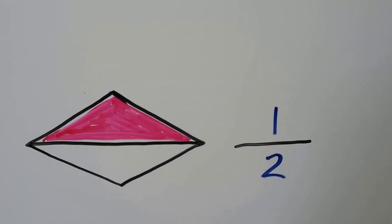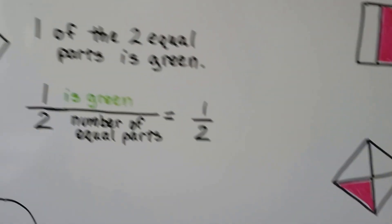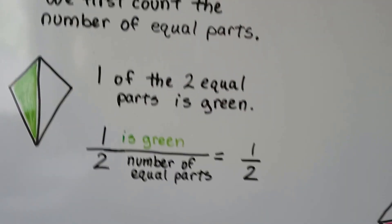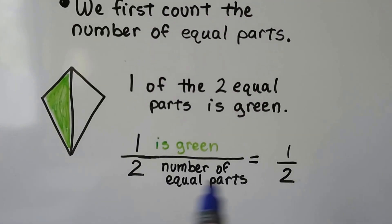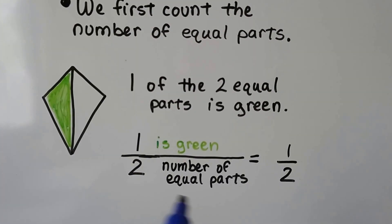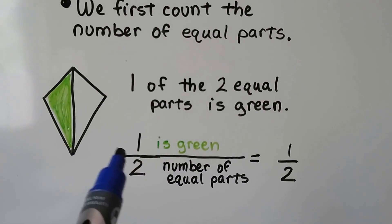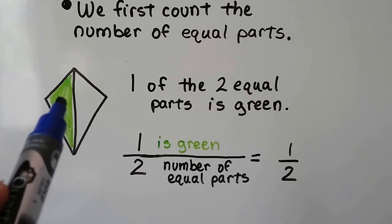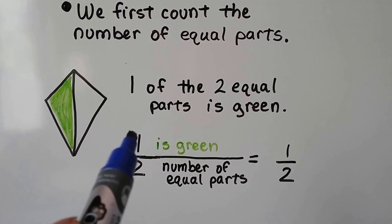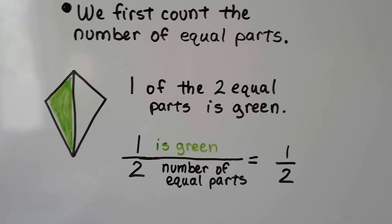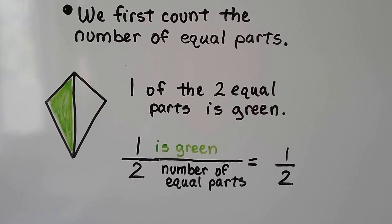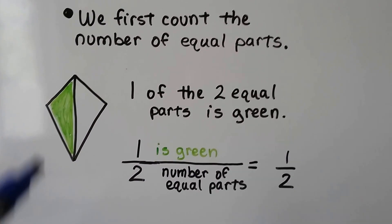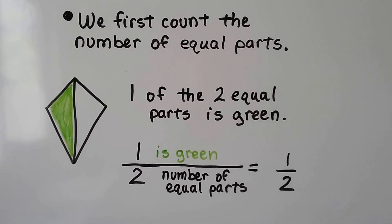Just remember: you count the number of equal parts and that's what goes on the bottom of the fraction. Whichever part is shaded or has a color, that's what goes on the top. The bottom is the number of equal parts; the top is the part that is shaded or colored.